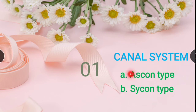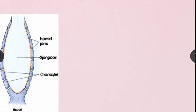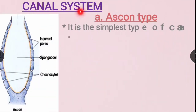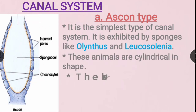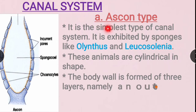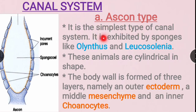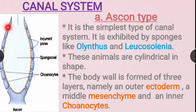Canal system — Ascon type and Sycon type. The Ascon type canal system is one of the simplest types. We see it in Leucosolenia and Olynthus. These animals are cylindrical.